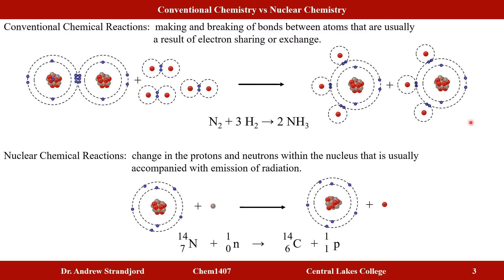In a nuclear chemical reaction, I'm not looking at electrons being shared or exchanged. I'm specifically looking at changes in the nucleus — changes in the number of protons or neutrons — usually accompanied by emission of radiation or another atomic particle. In this example, nitrogen is bombarded with a neutron, causing a neutron in the nucleus to eject a proton, converting nitrogen with seven protons into carbon with six protons.